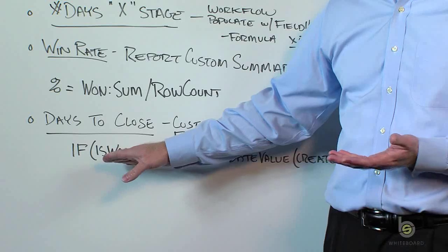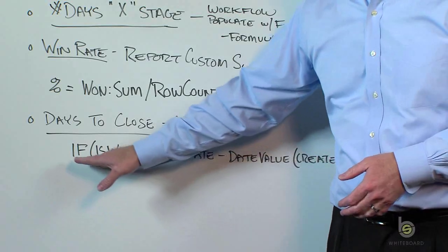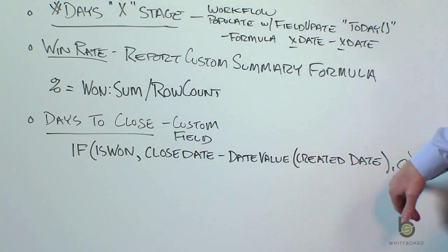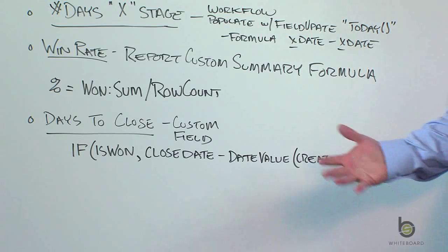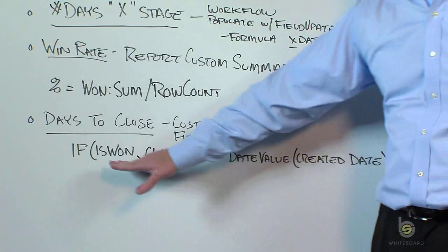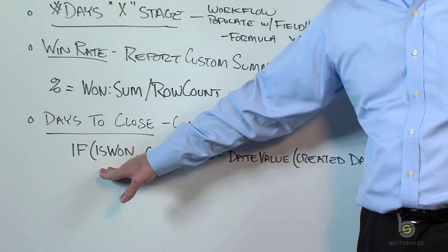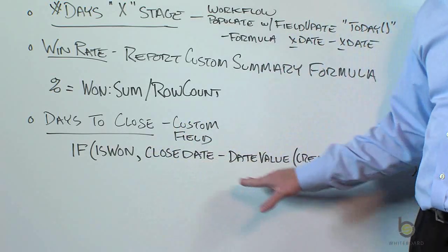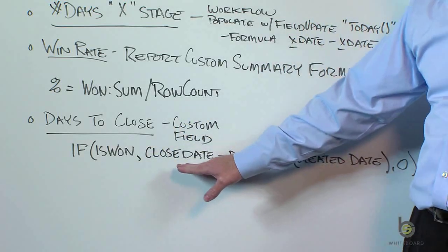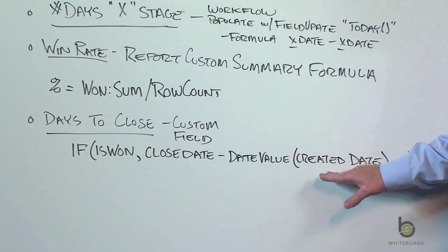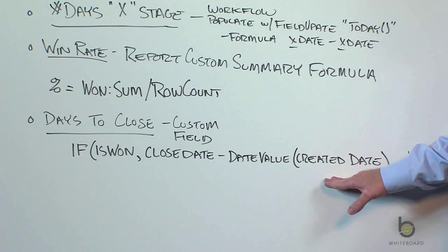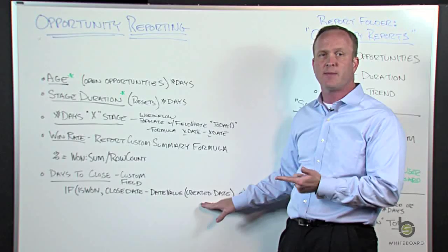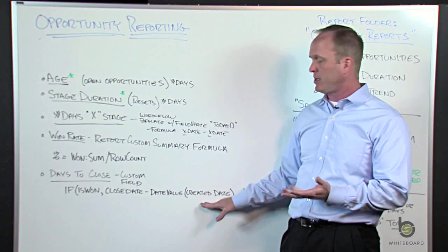It's an IF statement: if this is true, then do this; otherwise do that. So if IsWon — the opportunity is won — the true statement is: take the close date and subtract the created date. The date we won the deal minus the date we created the opportunity gives you a number.